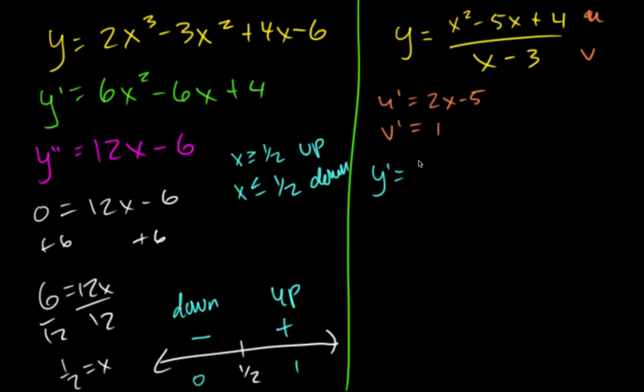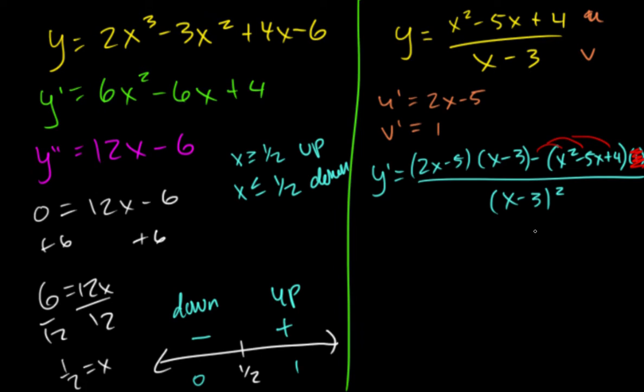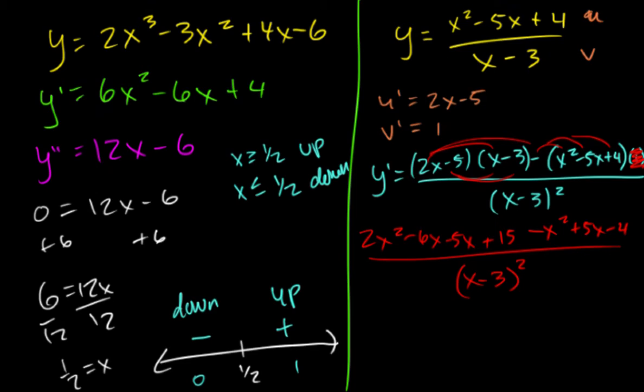And then if we plug that all into the quotient rule, we can find the first derivative, which is 2x minus 5. This one doesn't really matter because distributing the 1. So I'll distribute the negative here. So negative x squared plus 5x minus 4.